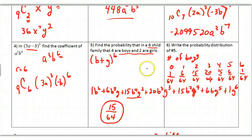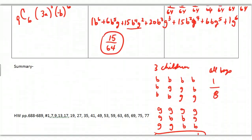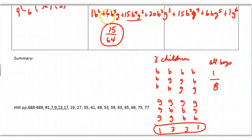This connects to binomial probabilities, which we'll explore further later. For the summary: remember that r is always one less than the term number, and n is the exponent — the same as the row number in Pascal's triangle. That's the homework. Thank you very much; I hope you enjoyed this.